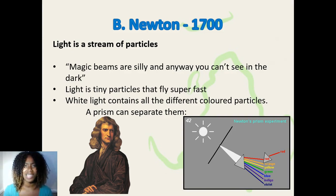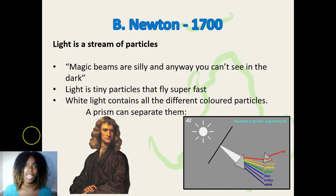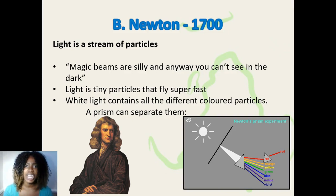Newton thought magic beams were silly. He theorized that light is a stream of particles — tiny particles that fly very, very fast. White light from the sun contains different color particles that are separated by a prism. When the density changes, the heavy particles change more and the light particles change less.